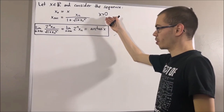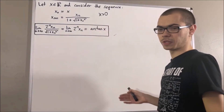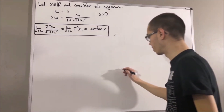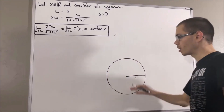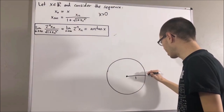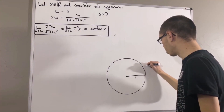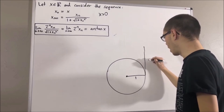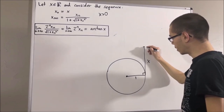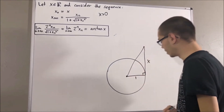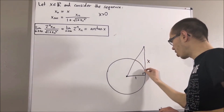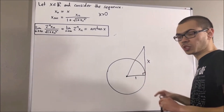If x is greater than zero, what does arctangent of x represent geometrically? One way of representing it is as follows. Let's consider a circle of radius one. We're going to draw a line segment tangent to the circle until we reach a length x, and then draw a line from this point to the center of the circle. It turns out the length of this arc is precisely equal to the arctangent of x.